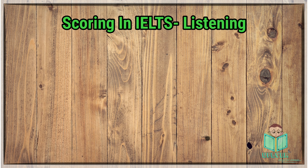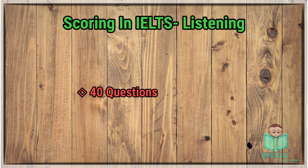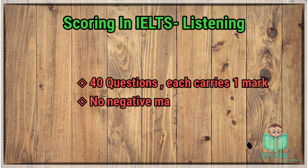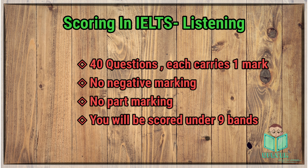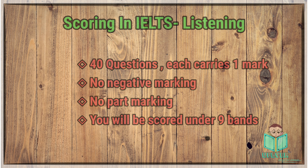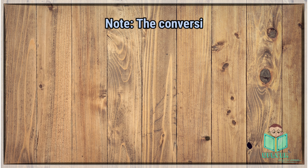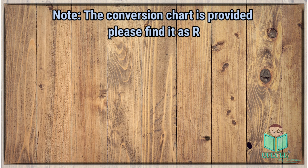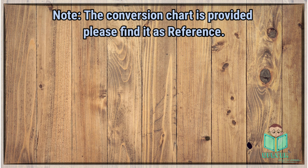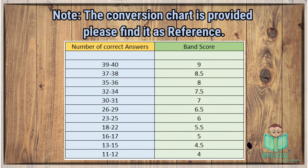The scoring pattern is: each correct answer is allotted one mark. There is no part marking or negative marking. The highest band score is 9. The conversion table is attached for your convenience. Kindly go through it and note how many answers you need to get correct for achieving your desired band score.